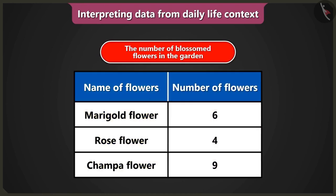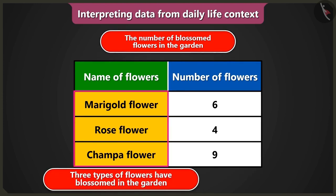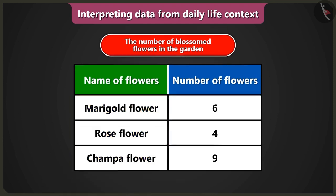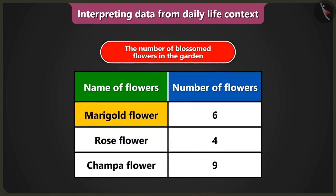There are two columns in the table. In the first column, the blossomed flowers in the garden are written. The names of the flowers are miracle flower, rose flower and chumpa flower. From this data, we can know that three types of flowers have blossomed in the garden: first is miracle flower, second is rose flower, and third is chumpa flower.